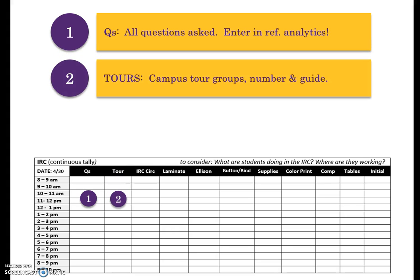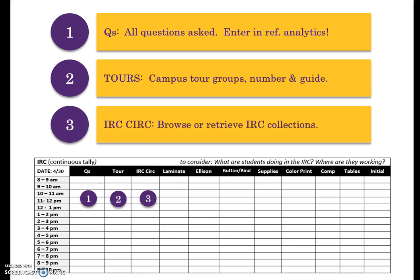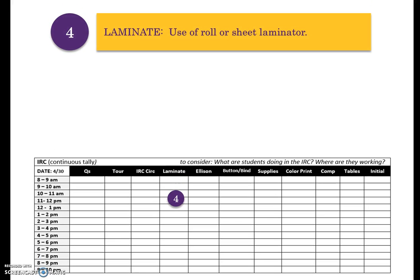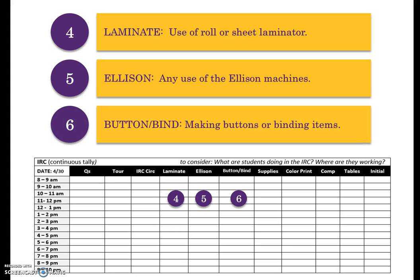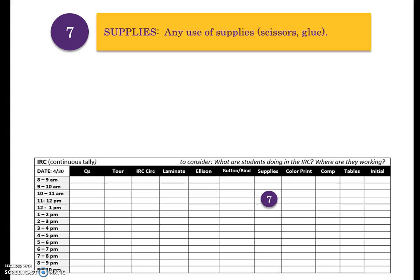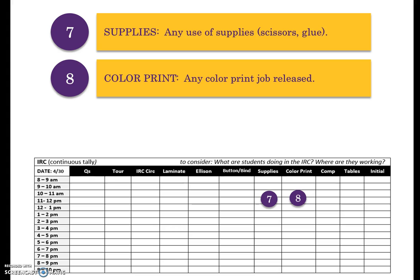Campus tour groups: be sure to count the guide and group members. IRC circ is anyone browsing the IRC circulating collection. Laminate is anyone using the roll or sheet laminators. Anyone using the Ellison machines or die cut collections. Any use of our button maker or binding machine. For supplies, any use of IRC supplies such as our paper cutter, scissors, or glue. Print jobs released to the IRC color printer.